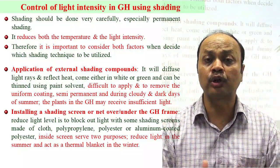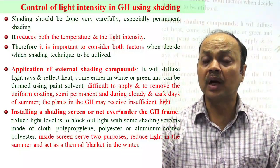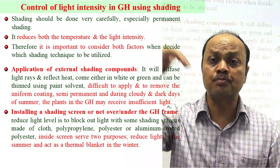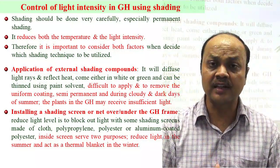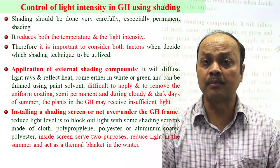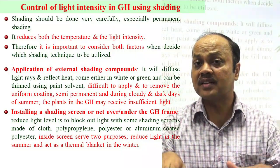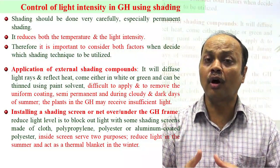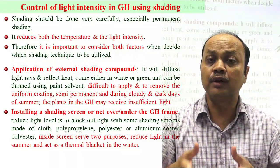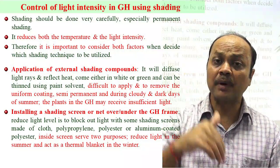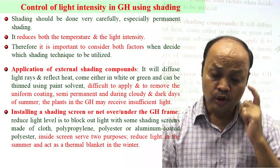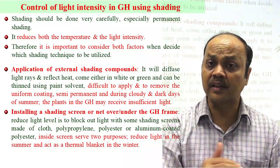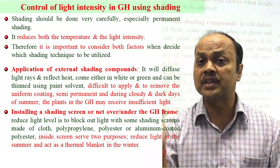Apart from shading compounds, you can install shade screens on the top of or inside the greenhouse. The problem with placing it on top is that light passes through the shade net material and then again through the cladding material — double attenuation. If placed inside, light already enters the greenhouse, then passes through the shade net — different challenges exist for both placements.